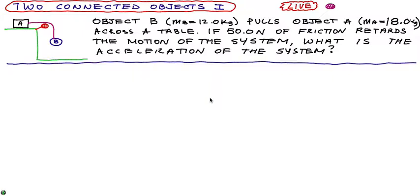And let's understand that the pulley has no friction, so that's not an issue. So the question says that object B has a mass of 12 kilograms, pulls object A mass of 18 kilograms across the table. If 50 Newtons of friction retards the motion of the system, what is the acceleration of the system?